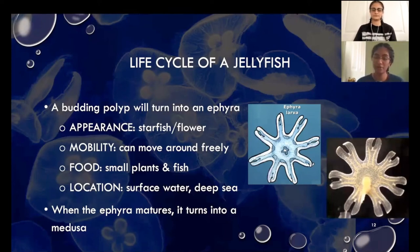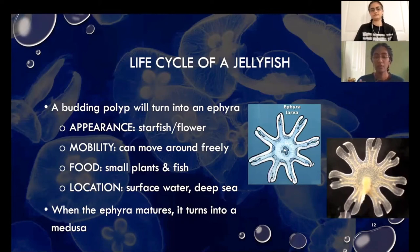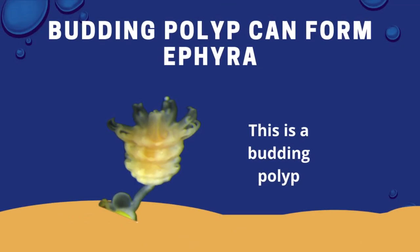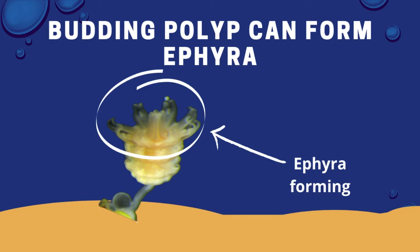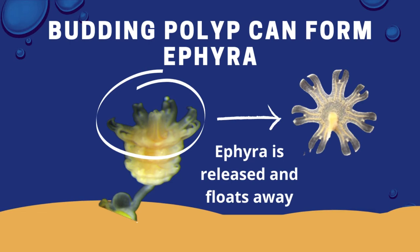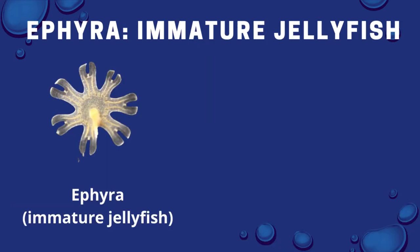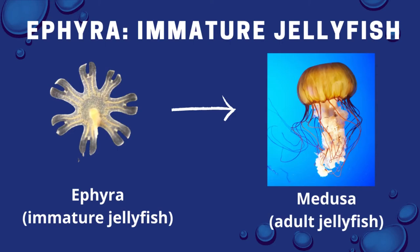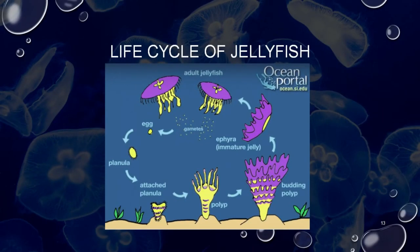A budding polyp will turn into an ephyra. An ephyra looks like a starfish or a flower. Just like a medusa, which is a mature adult jellyfish, an ephyra can move around freely. It eats small plants and small fish and it lives in surface waters or in the deep sea. When an ephyra matures it turns into a medusa. It's important to note that the life cycle of a jellyfish occurs in a cycle that repeats itself — the events repeat continuously in the same order.